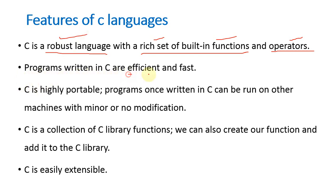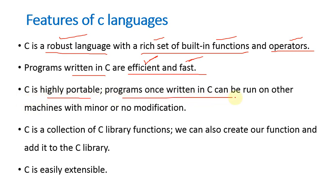Programs written in C are efficient and fast. Whether it is a small, medium, or large program, all programs written in C are very efficient and very fast in execution. In some programming languages, execution takes more time, but C is such a language that even large-scale programs are efficient, fast, and also accurate. C is highly portable — programs once written in C can be run on other machines with minor or no modifications.